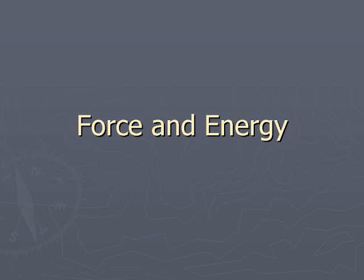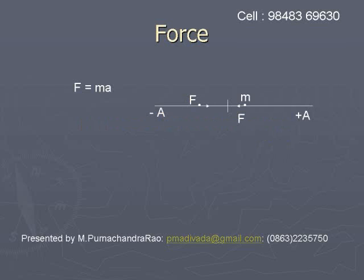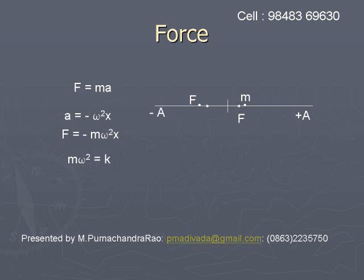Force constant from the relation of simple harmonic motion. The relation for force is F = ma. The relation for acceleration in simple harmonic motion is minus omega squared x. Hence the restoring force F equals minus m omega squared x. Comparing its magnitude to ma, we get k equal to m omega squared. This is the relation for force constant in simple harmonic motion.